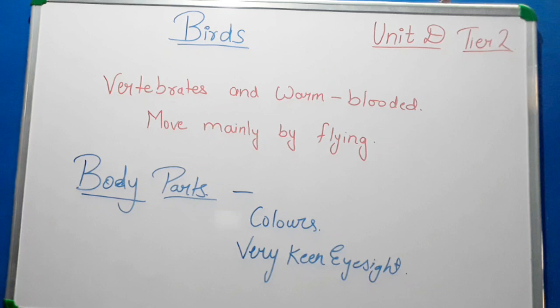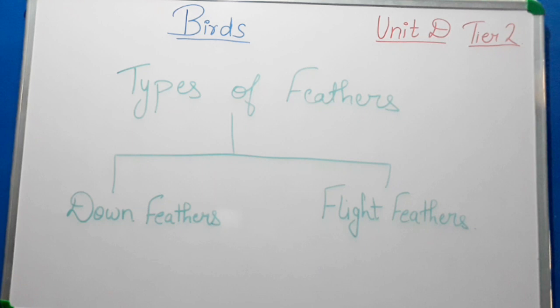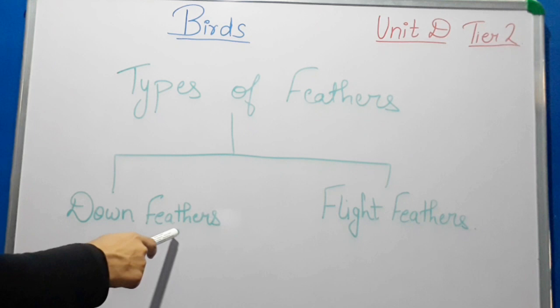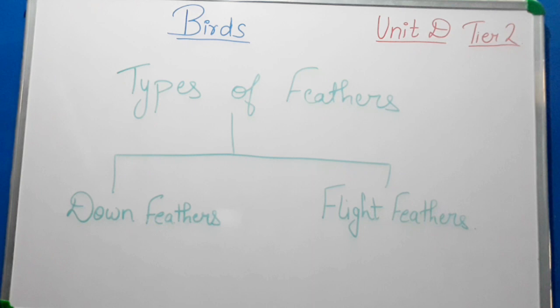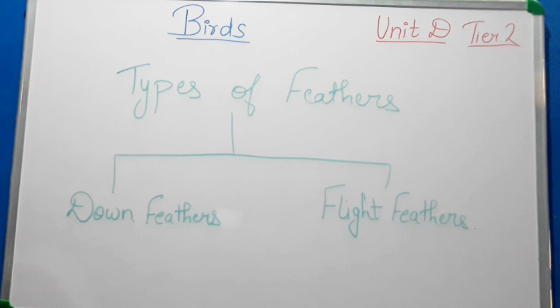Birds have two types of feathers. The first is down feathers — these are fluffy feathers that cover a bird's body and keep it warm. The second is flight feathers — these are long feathers attached to the wings and tail of a bird, which help the bird to fly.